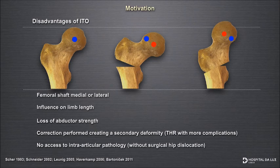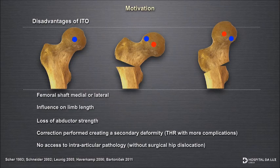You can have loss of abductor strength because of the high position of the trochanter in various osteotomies. And the fact that you are correcting the deformity while creating a secondary deformity. It's described that you can have later on total hip replacement with more complications, and you have no access to intra-articular pathology unless you do a simultaneous surgical dislocation with an intertrochanteric osteotomy, which is quite a demanding procedure.